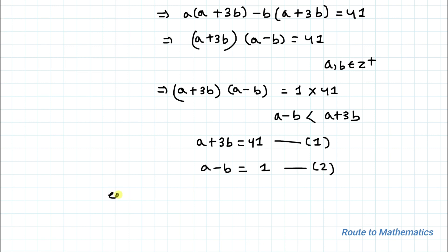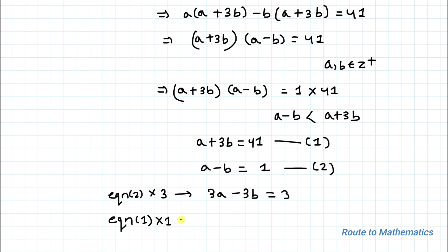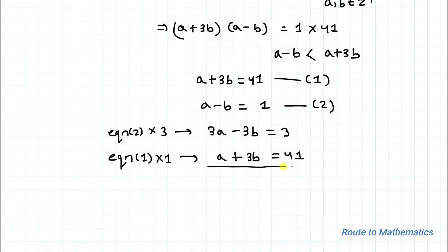Now we'll use the elimination method to find a and b. Multiplying Equation 2 by 3 gives 3a - 3b = 3. Equation 1 remains a + 3b = 41. Adding both equations, the -3b and +3b cancel out, giving us 4a = 44.